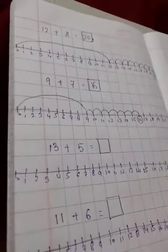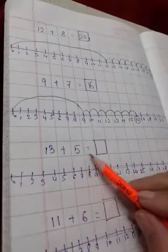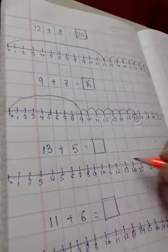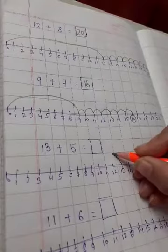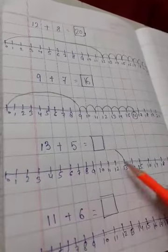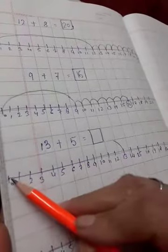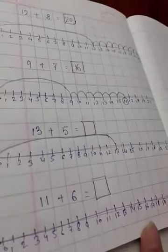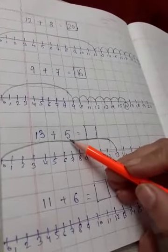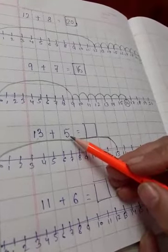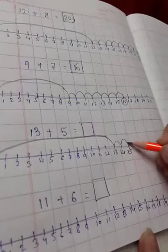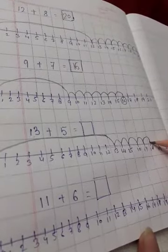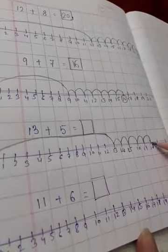Next sum is 13 plus 5 equal to box. So firstly we will go to 13, we will mark the curve and from 0 to 13 we will do a long jump from 0 to 13, ok. Now we will count small jumps up till 5, so 1, 2, 3, 4, 5. So this is number 18.